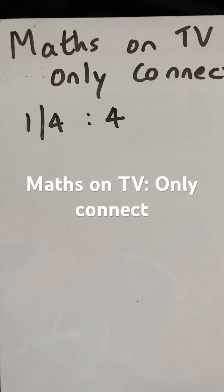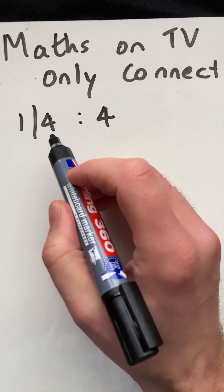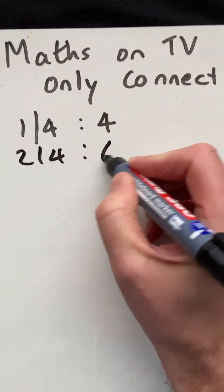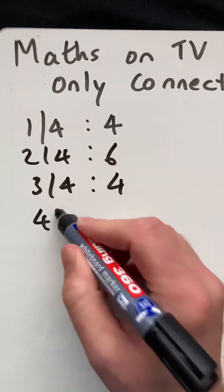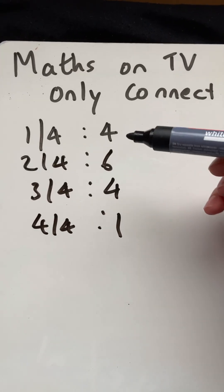Hello and welcome to Martin Maths doing a short on maths on TV. It's Only Connect again. One of their sequences goes one out of four gives four, two out of four gives six, three out of four gives four, and four out of four gives one. So what is going on here? What sequence goes four, then six, then four, then one?